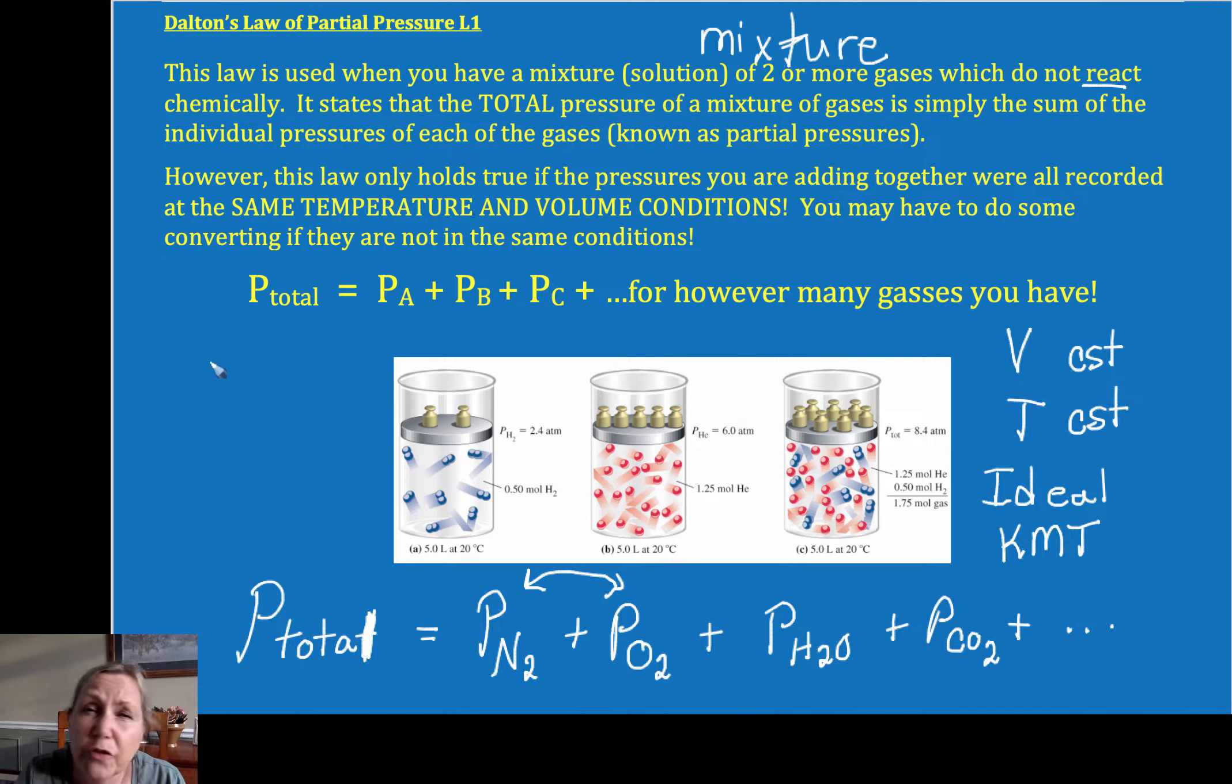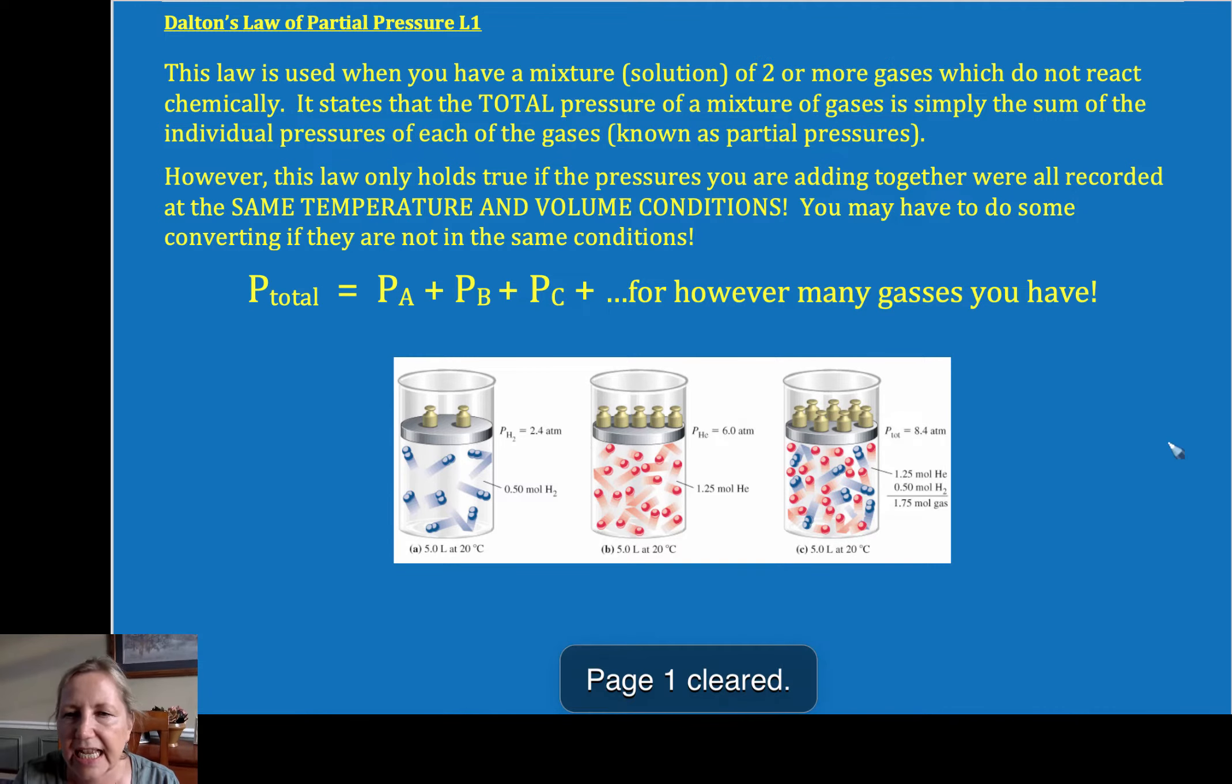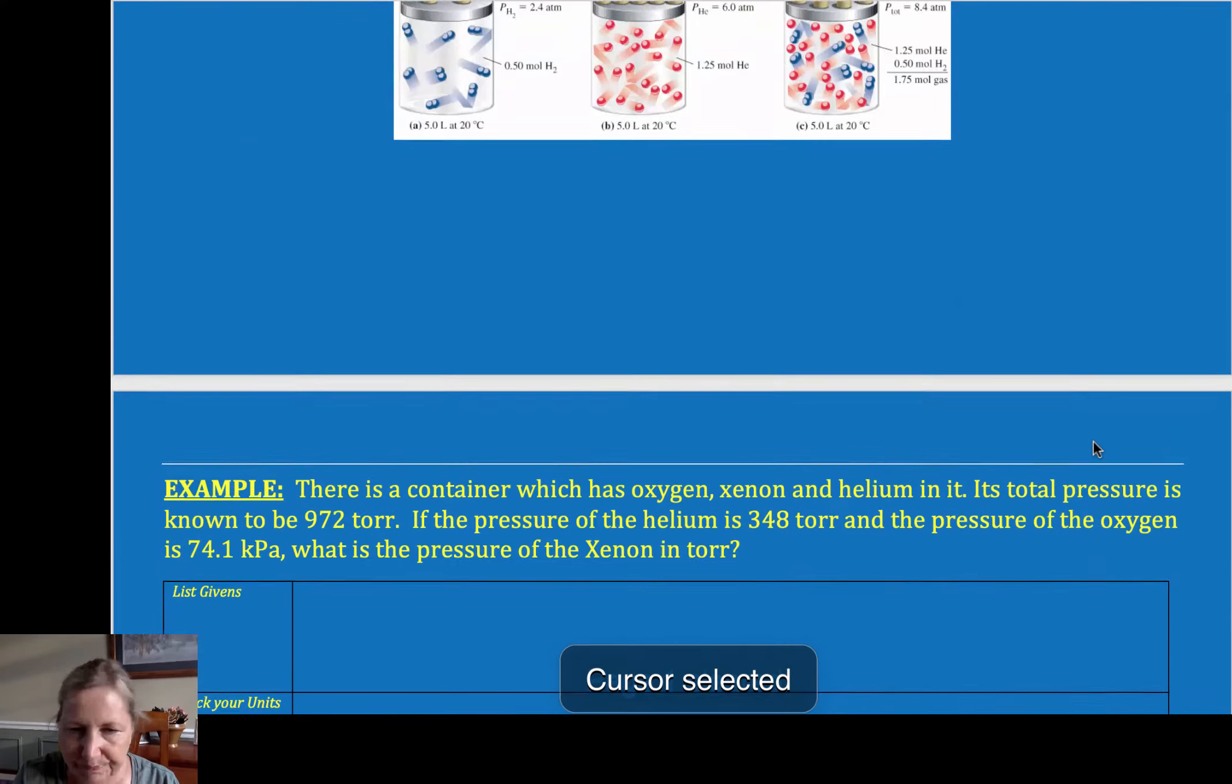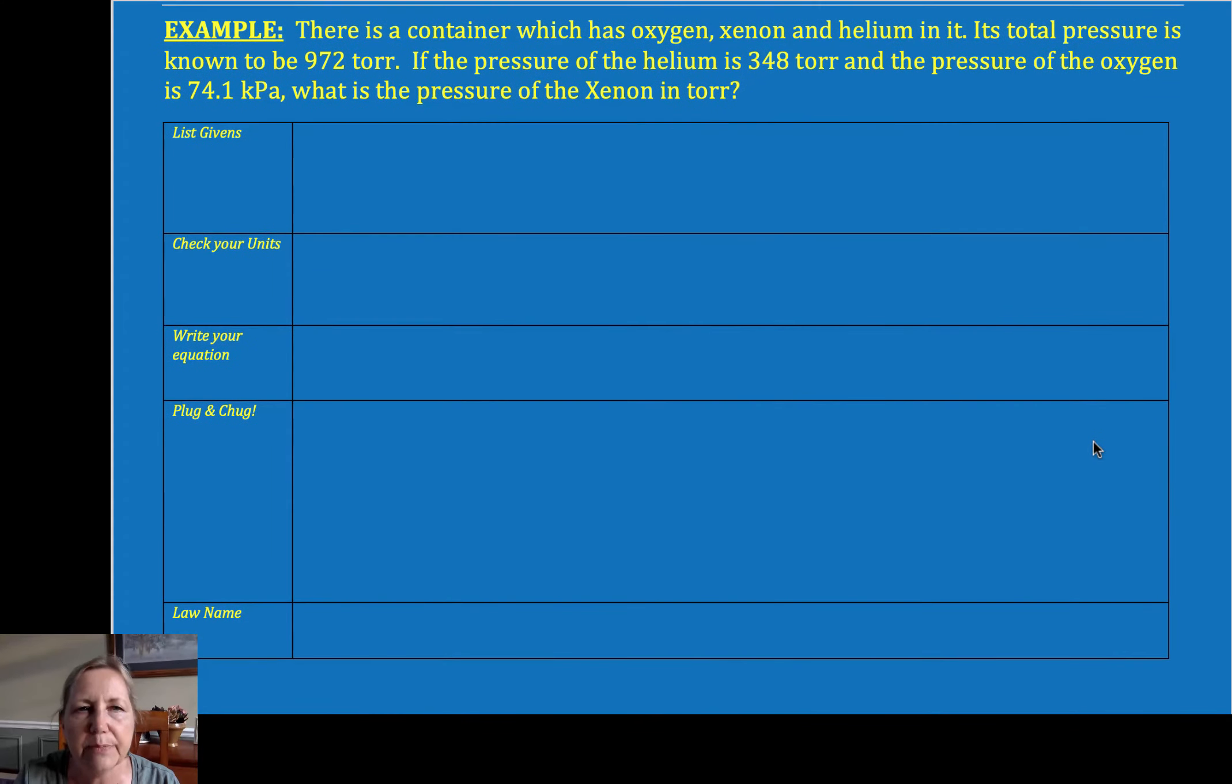Now, these are fairly easy calculations at an introductory level. The key is they all have to be the same units. You can't have one pressure in atmosphere, one pressure in torr, another in kilopascals. They all have to have the same units. So let's take a look at a calculation and how we would do these. I'm going to do my GUESS method again. It's a little longer, but it's very helpful.